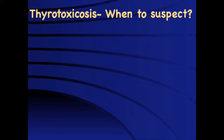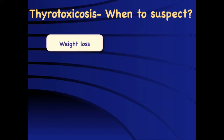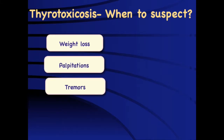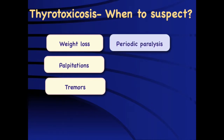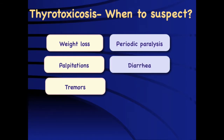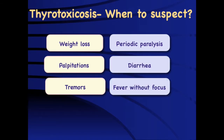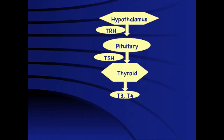When we suspect thyrotoxicosis in children, we commonly think of weight loss, palpitations, and tremors, but these features are not very common in children. Rarer presentations include periodic paralysis, diarrhea, and fever without focus, which can be the only clue to the diagnosis of thyrotoxicosis.